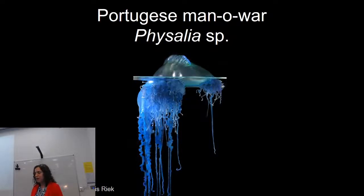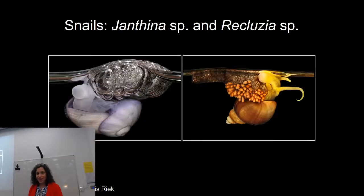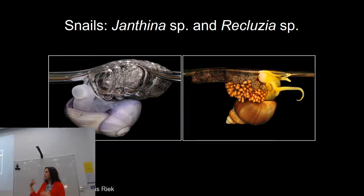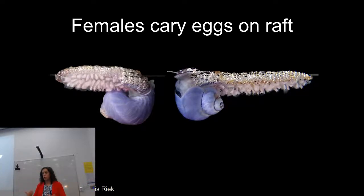Man o' wars are probably the most well-known and infamous members of the neuston. A colleague is studying man o' wars and their taxonomy — we don't have a good handle on number of species. There are also snails that float on the ocean surface and feed on man o' wars, blue buttons, and Valella. These are the predatory Janthina and Recluzia, which I fear are particularly susceptible to large-scale collections of surface-floating objects.